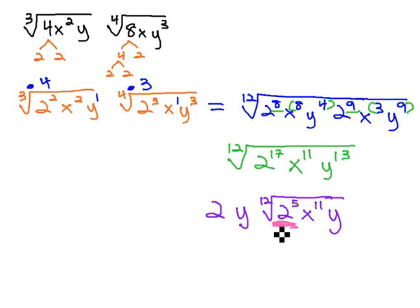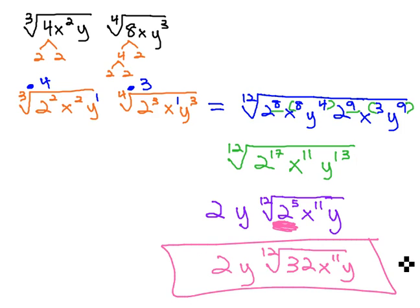The only thing left to simplify at this point is actually evaluating the 2 to the 5th power, giving us our final answer, which is 2 y times the 12th root of 2 to the 5th, which is 32, x to the 11th, y.